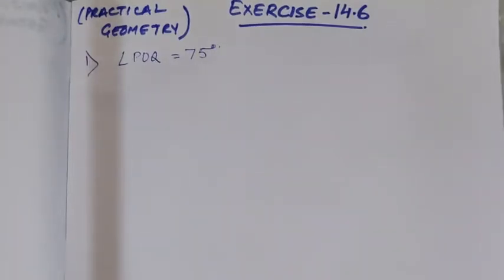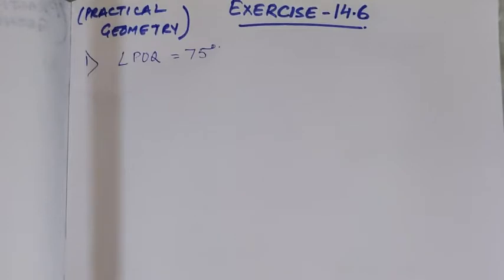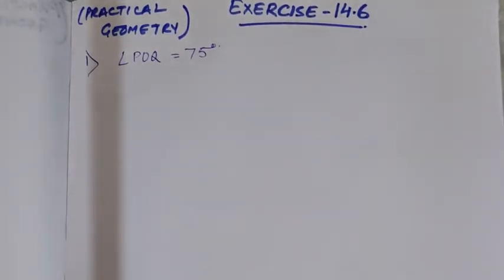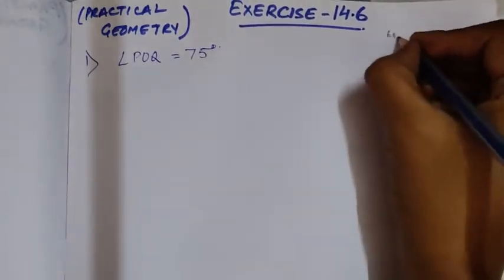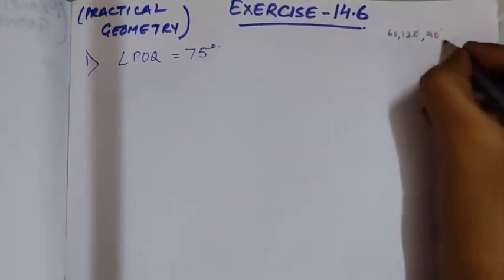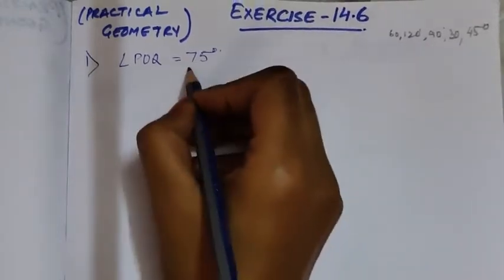Namaste students, we are continuing with the chapter Practical Geometry and today we are going to start Exercise 14.6. Question number one says: draw angle POQ of measure 75 degrees and find its line of symmetry. Line of symmetry means bisector line — first we have to draw 75 degrees and then bisect it. We have learned construction of basic angles: 60°, 120°, 90°, 30°, and 45°.